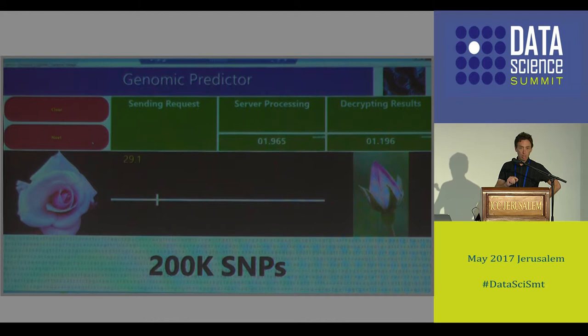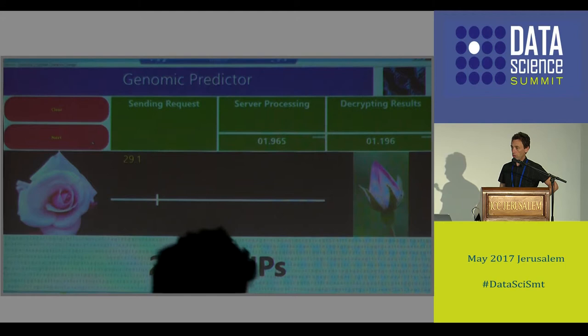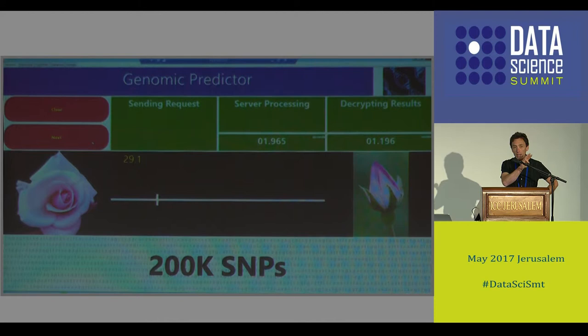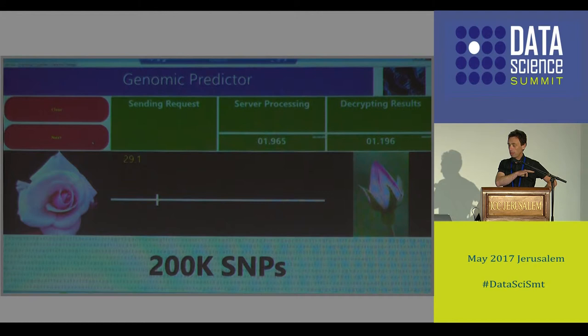To make it clear, the server didn't get to see anything - not only the DNA of the flower, it didn't even see the prediction it made. People sometimes ask: what would have happened if we didn't use encryption - would it take three seconds or less? I can tell you it would have been much faster without encryption. But the relevant question is: are you willing to wait three seconds to preserve your privacy? If it was your DNA being sent to predict your risk of a certain disease, are you willing to wait three seconds to make sure this information does not leak to your bank? If the answer is yes, then this is quite practical.